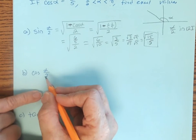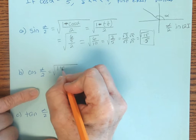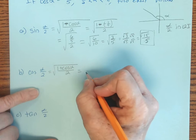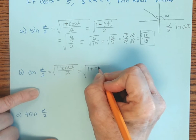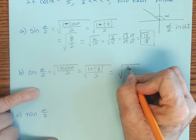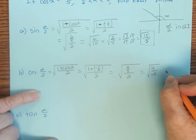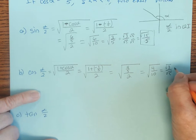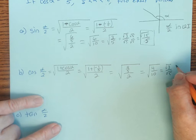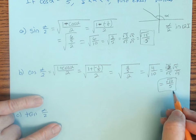For cosine of alpha over 2, the formula is the square root of 1 plus cosine of alpha, all divided by 2. Plugging in: 1 plus negative 1 fifth equals 4 fifths, so we have the square root of 4 fifths divided by 2. Multiplying by 1 half gives 4 over 10, which reduces to 2 over 5 — wait, simplifying under the radical gives square root of 2 over square root of 5. Rationalizing by multiplying by square root of 5 over square root of 5 gives square root of 10 over 5. So cosine of alpha over 2 equals square root of 10 over 5.